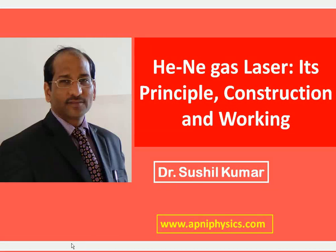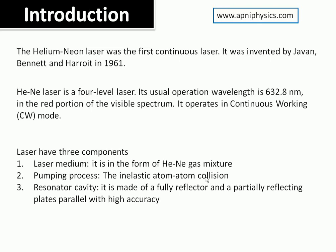In this video lecture, I will discuss the helium-neon gas laser: its principle, construction, and working. The helium-neon laser was invented by Javan, Bennett, and Herriott in 1961. It is a four-level laser whose usual operation wavelength is 632.8 nanometers, in the red portion of the visible spectrum. It operates in continuous working mode.